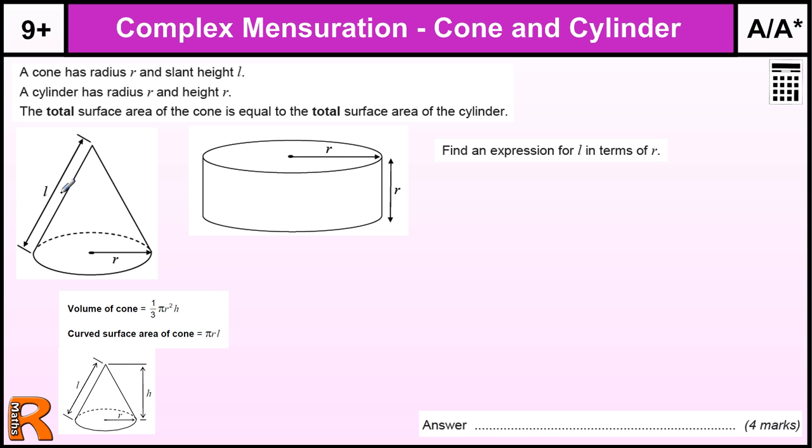Now you are told that these two surface areas are the same so let's just work out the surface area of each thing. So the cone, the curved surface area is πRL. Okay and that is just pretty much the same values that are used in the formula.